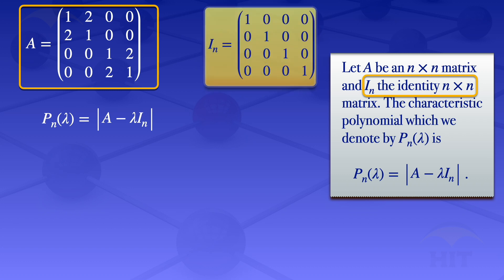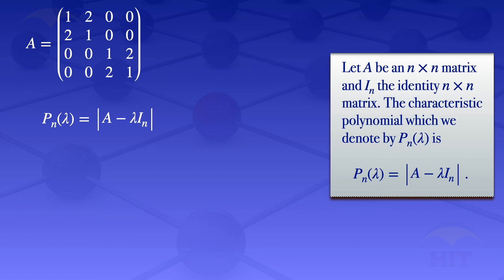The identity matrix has 1s on the diagonal. In the formula, we are multiplying that identity matrix by lambda, so when you multiply by lambda it results in having lambda on the diagonal of lambda I_N. When you subtract it from the given matrix, we'll subtract lambda from the elements on the diagonal of matrix A.